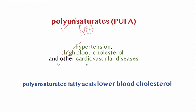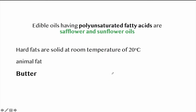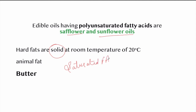Polyunsaturated fatty acids (PUFAs) are recommended by physicians for persons having hypertension, high blood cholesterol, and other cardiovascular diseases, because they lower blood pressure. Edible oils having PUFAs include safflower and sunflower oils. Hard fats are solid at room temperature (20°C); they contain long-chain saturated fatty acids — example is animal fat. Butter is soft because it contains a good quantity of short-chain fatty acids.